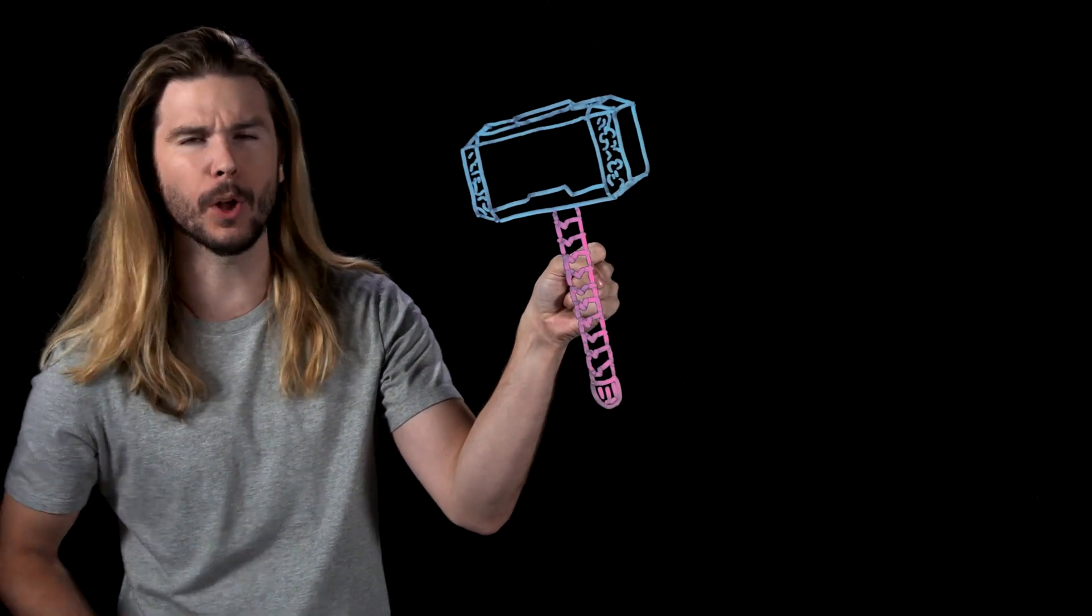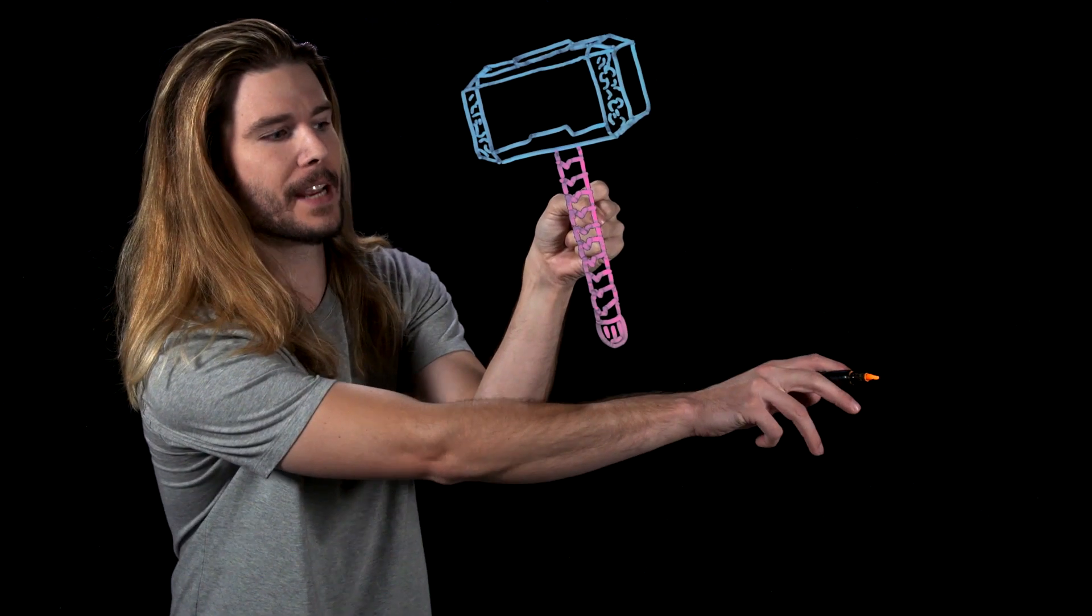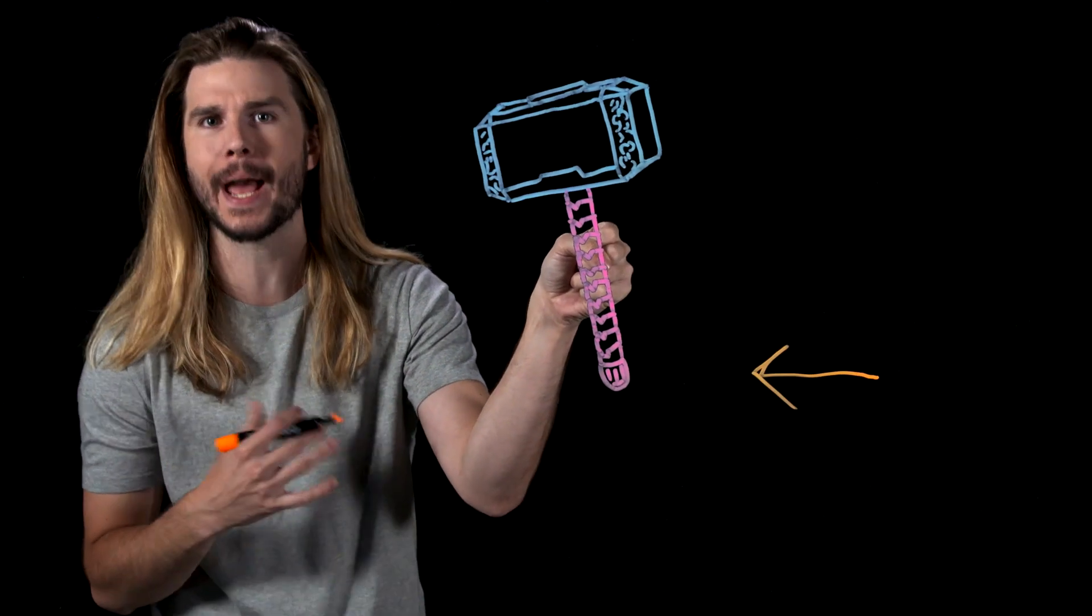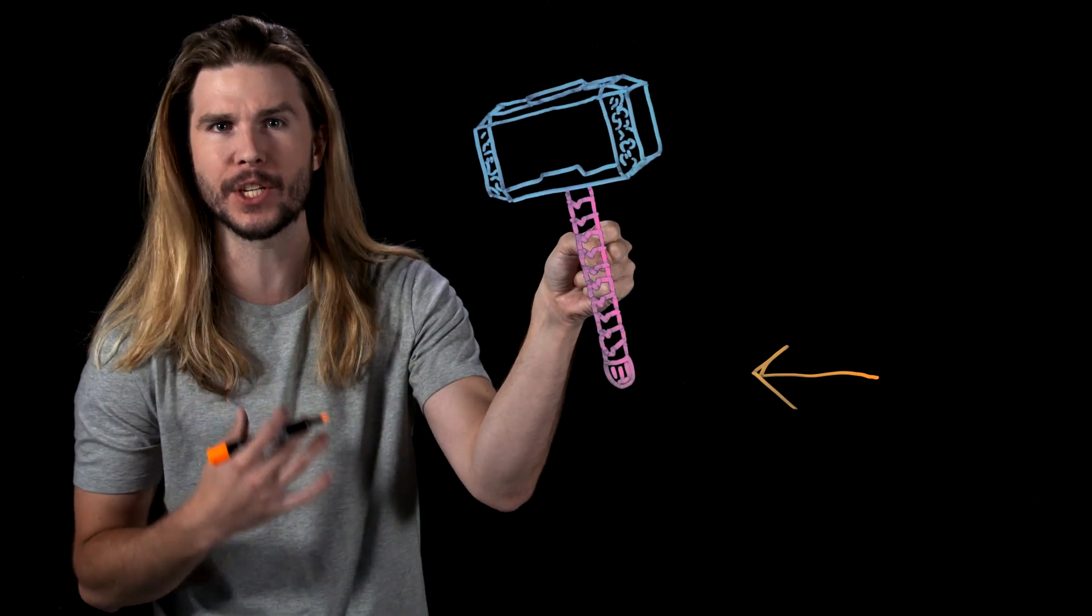But first, what is physically happening when Thor throws his hammer, it slows down, and then it returns to him? Well, even though we can't see it, there has to be some unseen force acting on the hammer's mass to decelerate it and change its velocity.